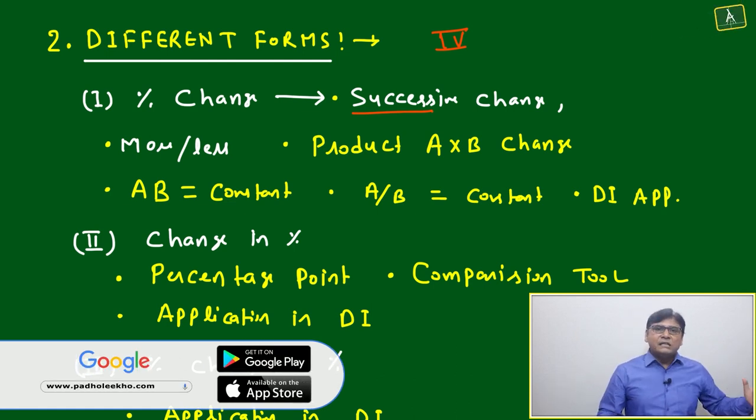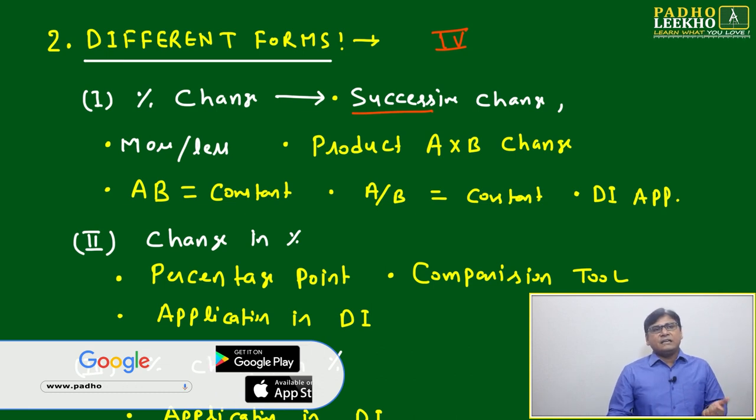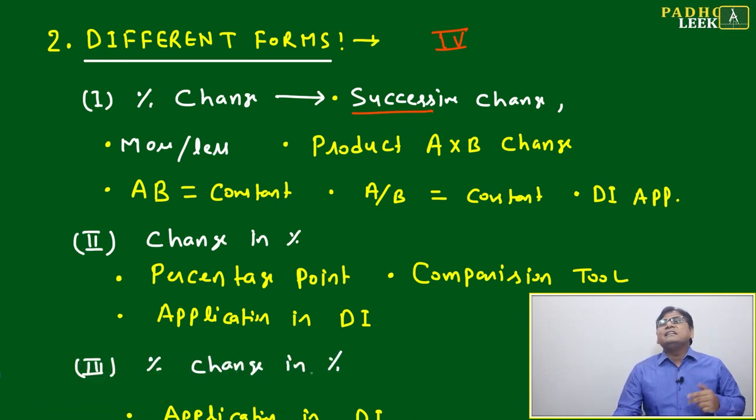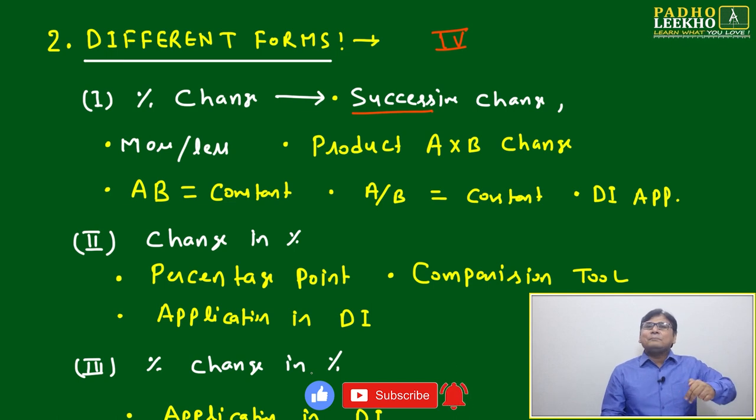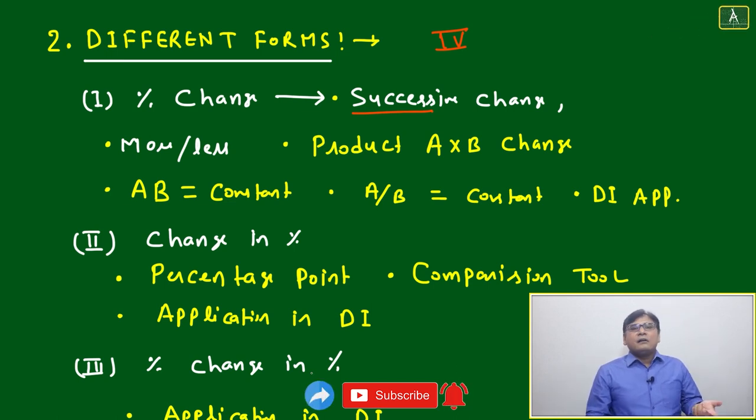Just opposite of that, if you are dealing with discount or depreciation - in terms of simple interest and compound interest, in terms of depreciation - then you will deal with numbers which are less than 100.